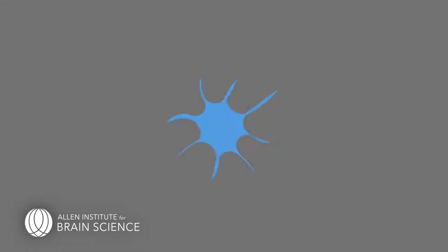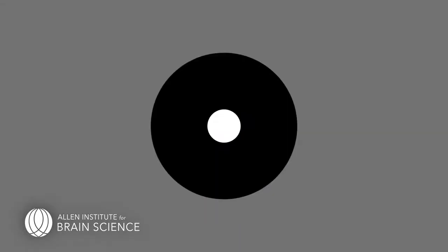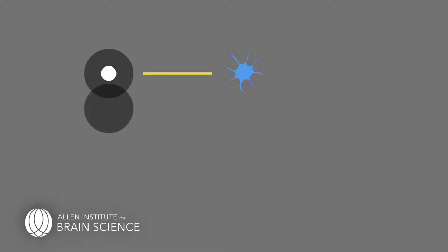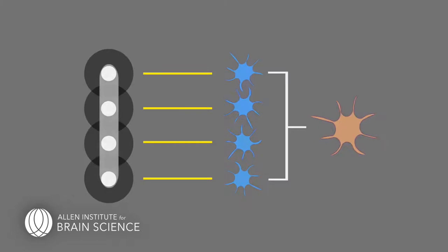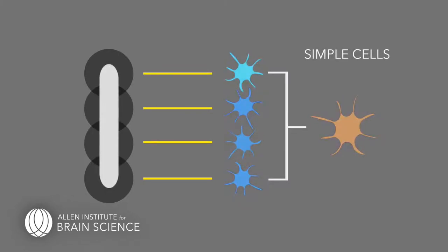The very first neurons in the visual pathway respond best to bright spots on dark backgrounds or dark spots on light backgrounds in certain locations of the visual field. Many neurons in primary visual cortex respond to edges, and one hypothesis is that they do so by receiving input from a set of neurons, each of which responds to bright spots on a dark background arranged in a line. If all of these neurons respond, they send a signal to another neuron that will respond when all of its input neurons are firing. These types of cells are called simple cells.